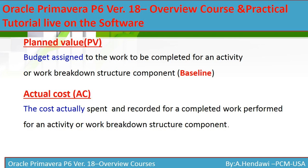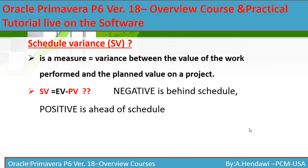Actual Cost is the cost spent and recorded for completed work performed for an activity or a work breakdown structure. This comes from your updates, your actual schedules — how much you have spent, paid to subcontractors, materials, whatever you have paid. This is your Actual Cost.